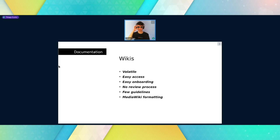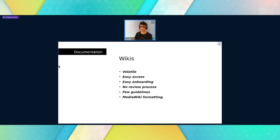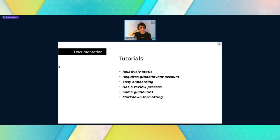Wikis are interesting because you just need an account — you create one with your email and can change any content on the wiki. It's incredibly volatile content, meaning it changes often. It's very easy to get started; you simply learn a few wiki pages about MediaWiki formatting. It has no review process — content added is only reviewed after it's added, not before. It also has very few guidelines.